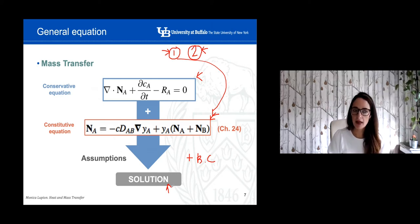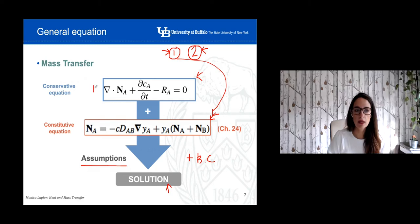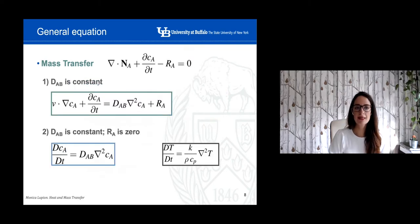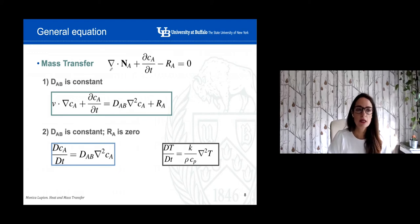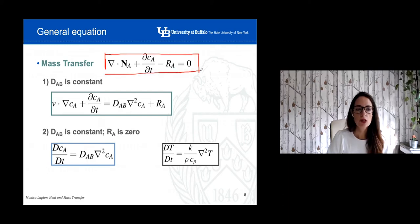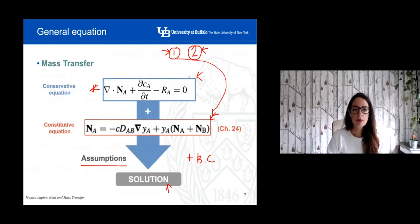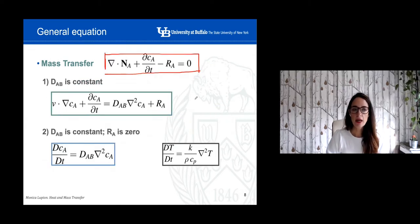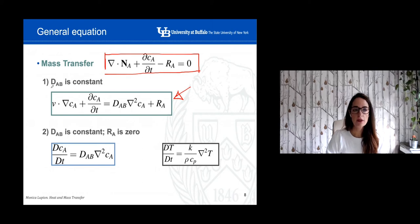Let's see how we can simplify these equations. We're going to assume a few facts in order to simplify. Starting with the general equation — when the diffusion coefficient is constant, and when we combine these two equations, the general equation will be transformed. So this is a general equation of the mass transfer process when the diffusion coefficient is constant.